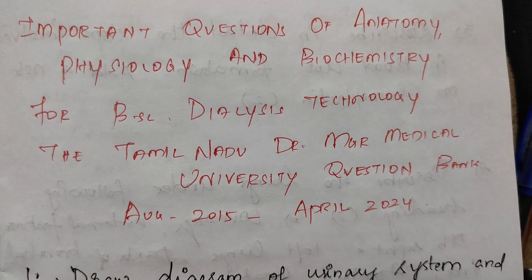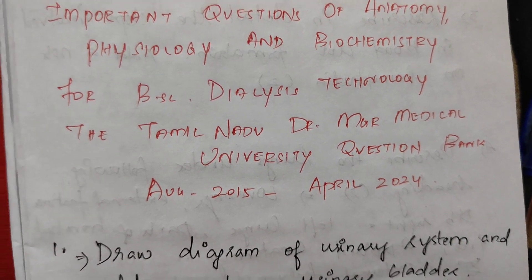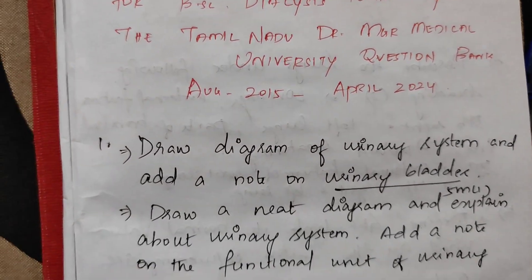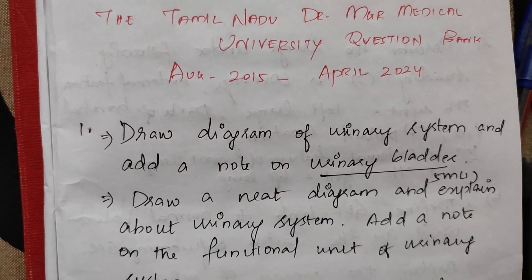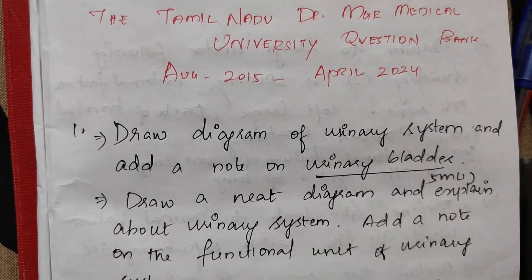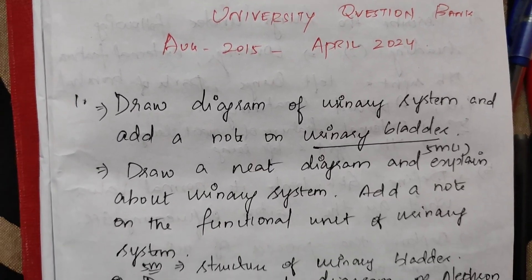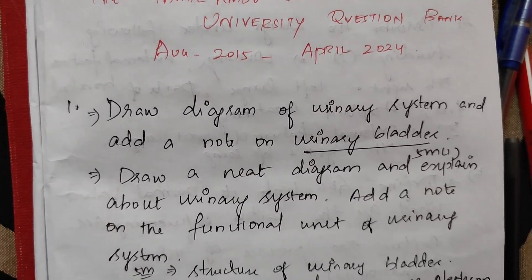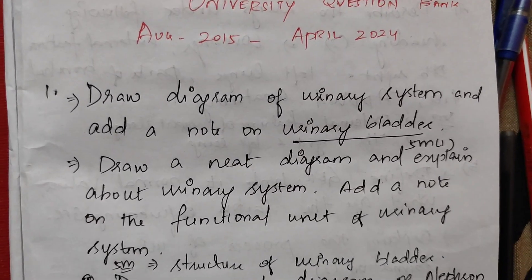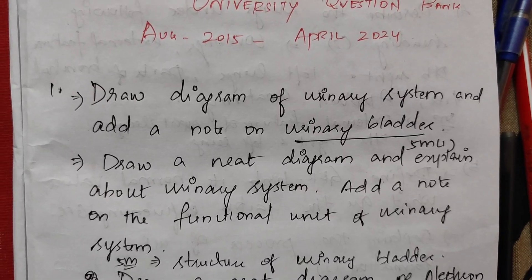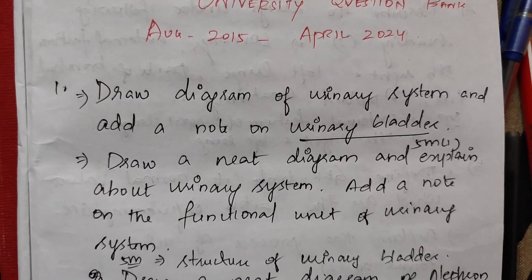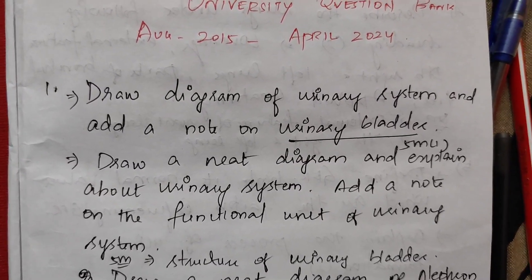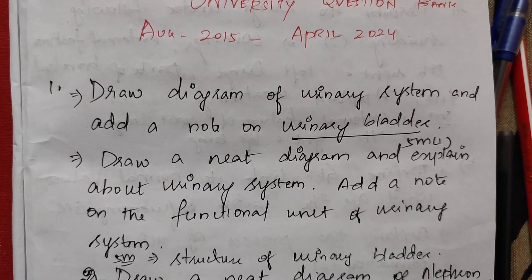From the beginning, I have mentioned the questions — how many topics are related to 5 marks and 15 marks, and how many times they repeat. First, I have mentioned the 15-mark question: draw a diagram of the urinary system and add a note on the urinary bladder. It comes to 15 marks.